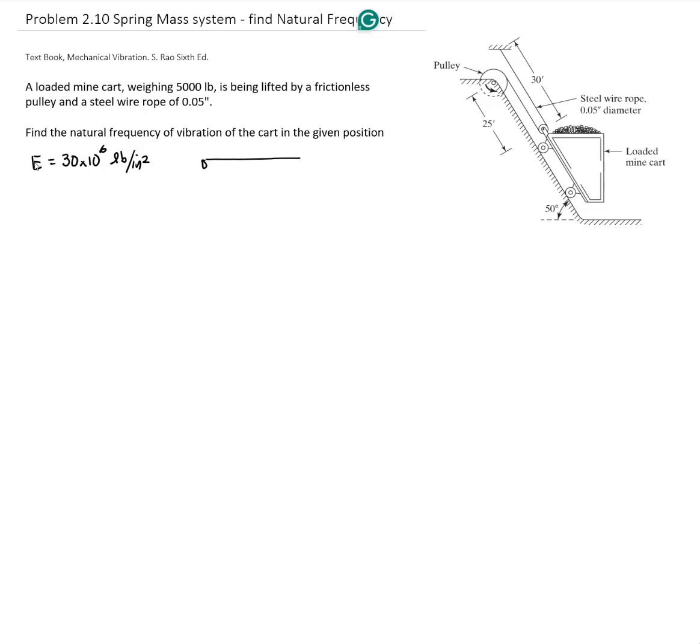We have a circular rope. From the tables, the equivalent spring constant for this type is area times Young's modulus divided by length.